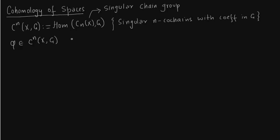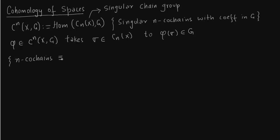Take an element φ of the singular n-cochain group with coefficients in G. This takes σ, a singular simplex belonging to the singular chain group, to φ(σ) which is an element of the group G. Since singular simplices form the basis of the singular chain group, n-cochains are precisely equal to the functions from singular n-simplices to the group G.